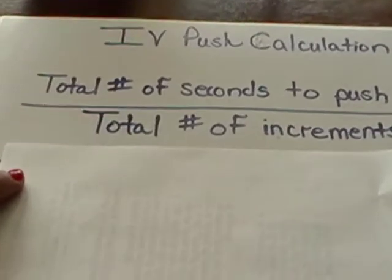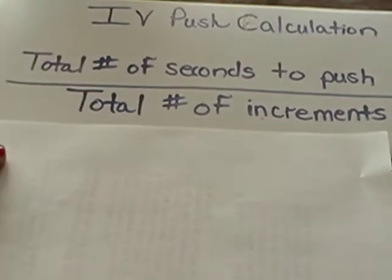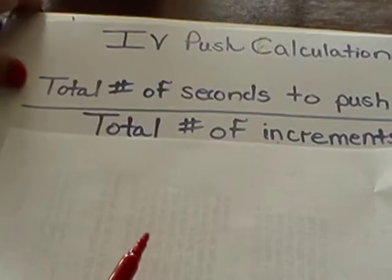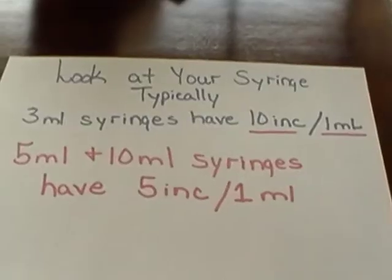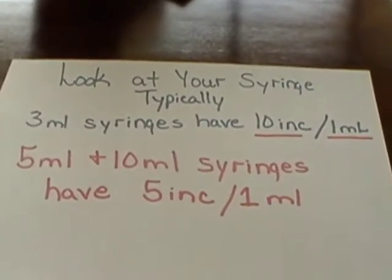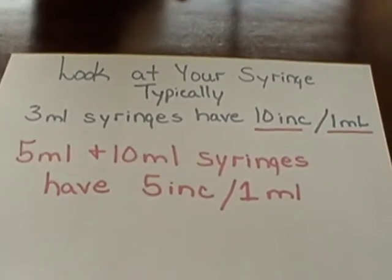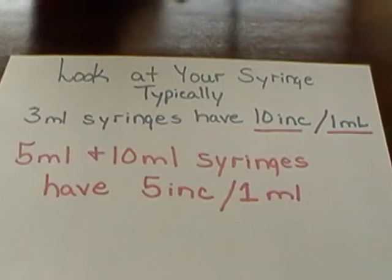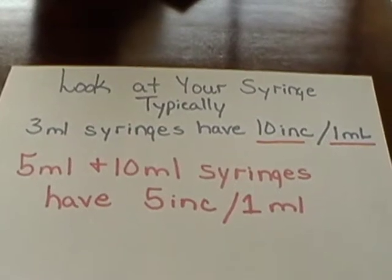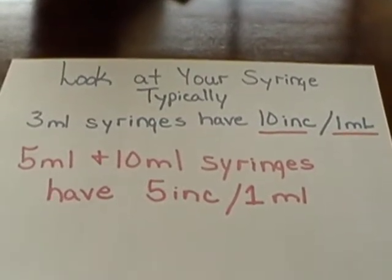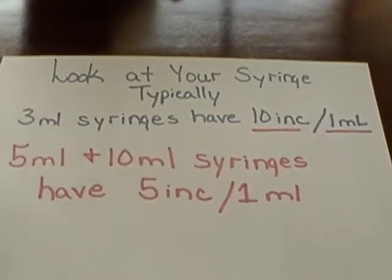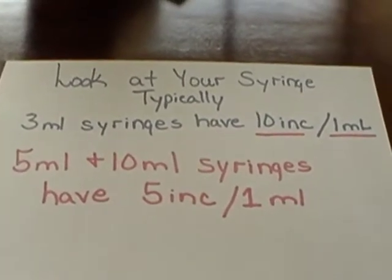Now we're going to discuss how to reach each one of these numbers. First, we need to go to our drug books and look up some information before we can calculate it. Once you figure your total volume that you're going to have with the diluted medicine, you need to determine what size syringe to use and how many increments per milliliter your syringe has.